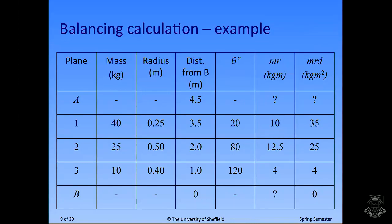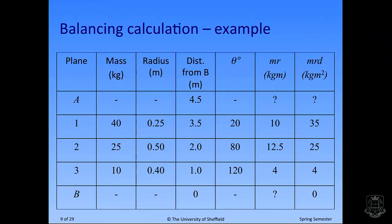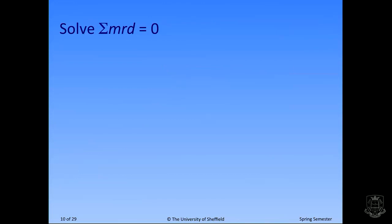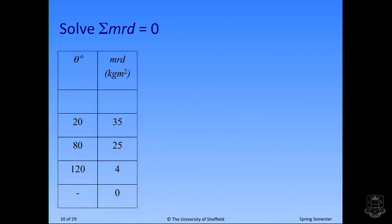We then start working out quantities for static and dynamic balance. The M times R column is the static balance, and MRD is the dynamic balance. We can calculate the MR and MRD values we already have, but that leaves us with some missing values - three question marks to solve. Because in the MRD column we've only got one question mark, it's simplest to start there. In the MR column we've actually got two unknowns, so we need to go to MRD first.